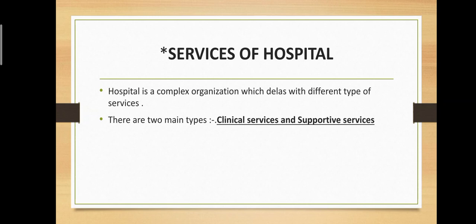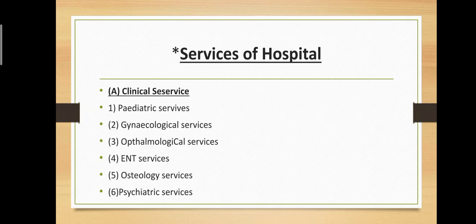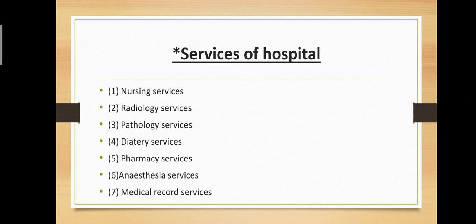Next main topic: services of hospital. A hospital is a complex organization which deals with different types of services. There are two main types: clinical services and supportive services. Under clinical services there are six subtypes: pediatric services, gynecological services, ophthalmological services, ENT services, osteology services, and psychiatric services.